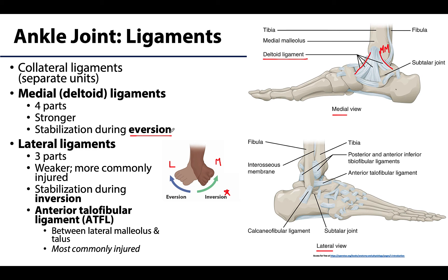On the lateral side you have the aptly named lateral ligaments, of which there are three: anterior talofibular, calcaneofibular, and — not visible in this illustration — the posterior talofibular ligament. These all attach on the lateral malleolus of the fibula, but unlike the medial ligaments, they don't interweave together. Due to this and other reasons, they are relatively weaker than their medial counterparts and allow a greater range of motion in inversion, for which they provide stabilization.